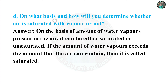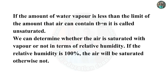Question 7d: On what basis and how will you determine whether air is saturated with vapor or not? On the basis of the amount of water vapor present in the air, it can be either saturated or unsaturated. If the amount of water vapor exceeds the amount that the air can contain, it is called saturated. If it is less, it is called unsaturated. We can determine whether air is saturated with vapor or not in terms of relative humidity — if relative humidity is 100, the air is saturated, otherwise not.